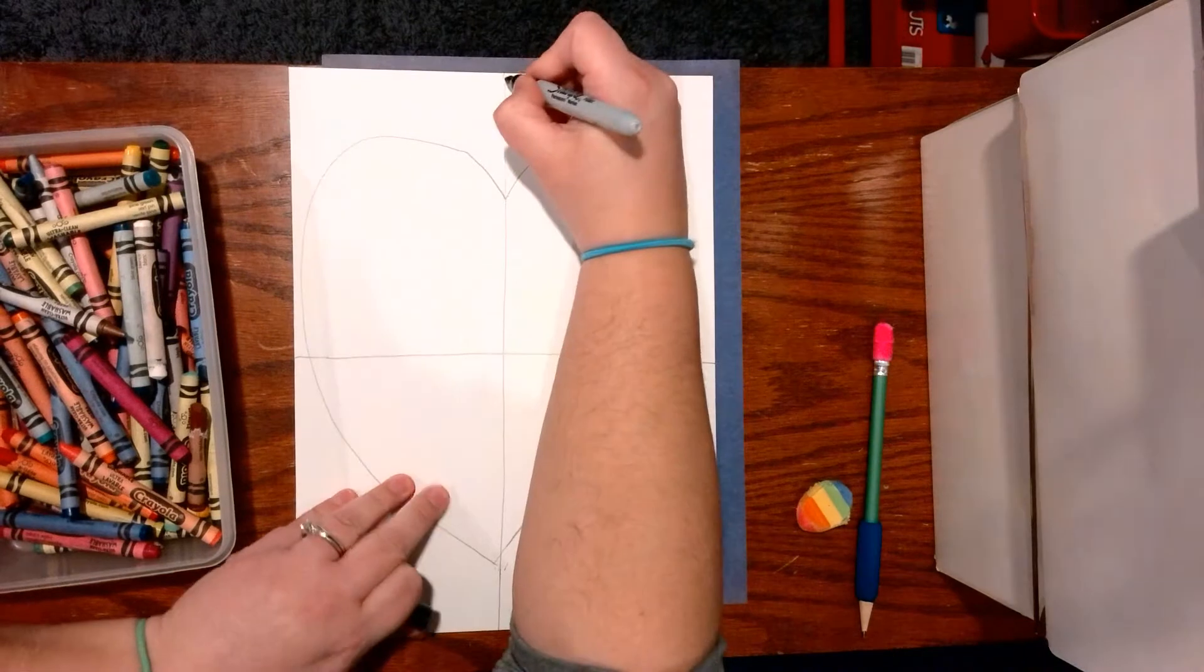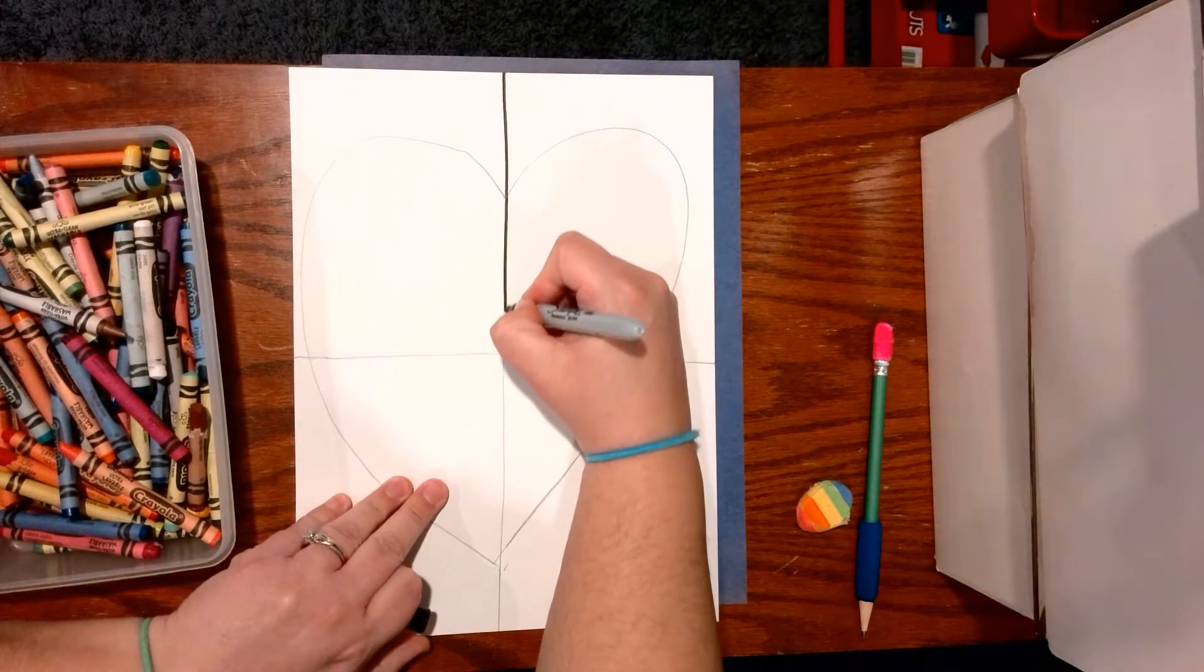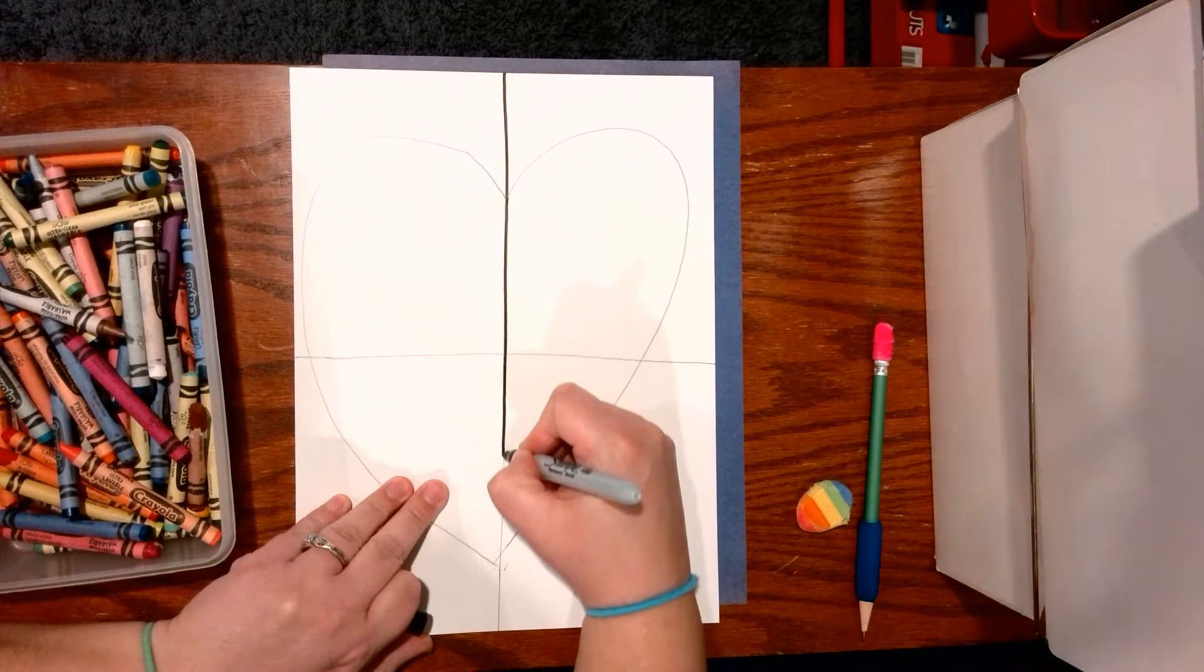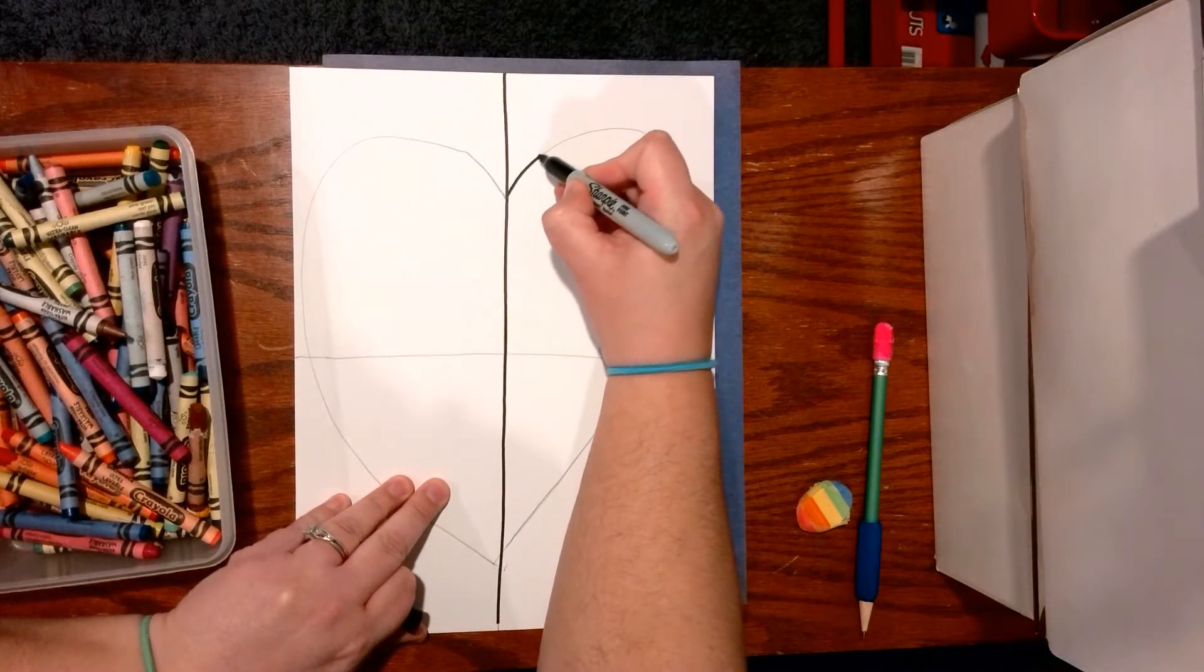Once you're done with that part, you are going to trace all this with your sharpie. And if you need to erase any peeking pencil, go ahead and do that.